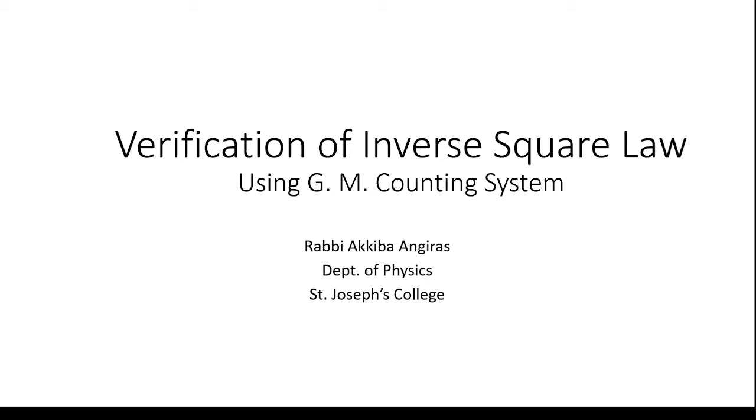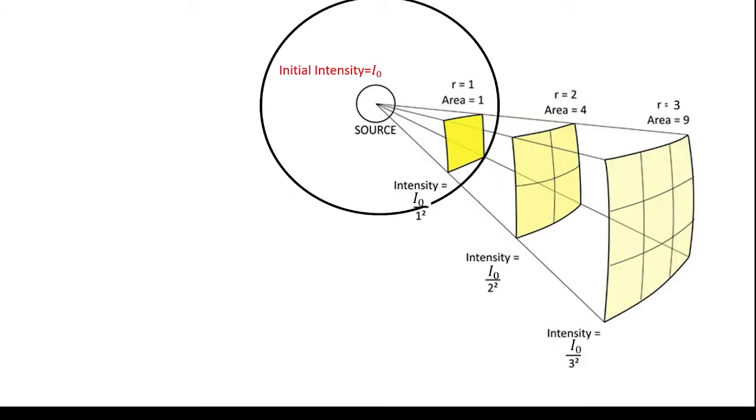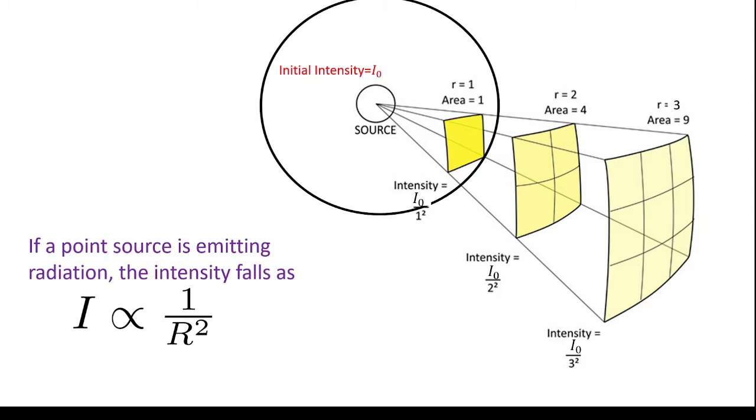Verification of inverse square law using GM counting system. If you have a point source with an initial intensity I0, then we will be able to see that the intensity falls as I is proportional to 1 by R squared. This is basically called as the inverse square law.